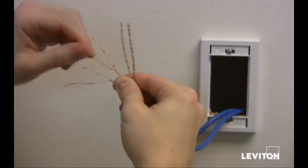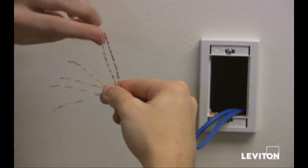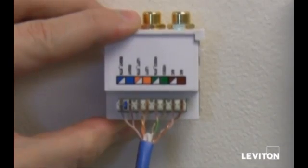Then untwist the wire pairs. This will make it easier to push them into the IDCs. Leave the twist intact to within about half an inch of the IDC.